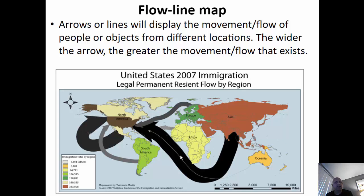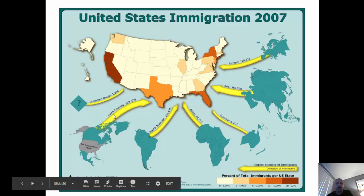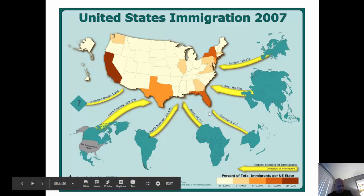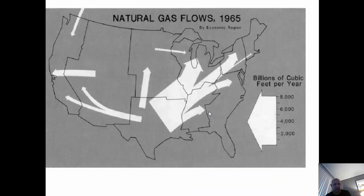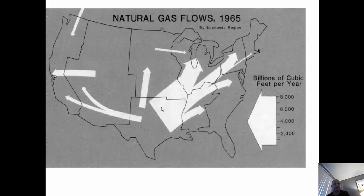Don't confuse isoline and flow line — they're two different things. A flow line map has lines with arrows on them displaying the movement or flow of something, whether it's people or objects from one location to another. The wider or larger the arrow, the more flow or movement there is; the smaller or skinnier the arrow, the less movement. Here we can see a map of immigration into the United States in 2007 — we're getting immigrants from some areas in larger numbers than others, with Asia and North America providing larger numbers and Oceania much fewer. Here's natural gas flows in the United States in the 1960s — coming out of Texas and being shipped to the Northeast like New York, where a lot of people were living.